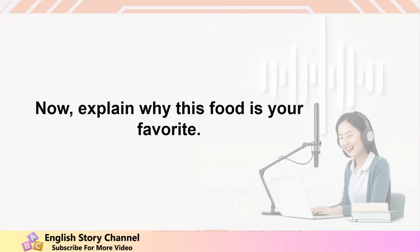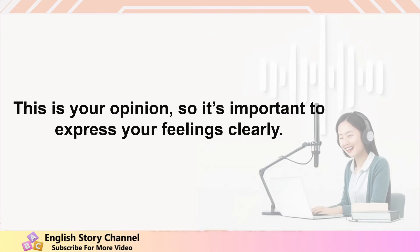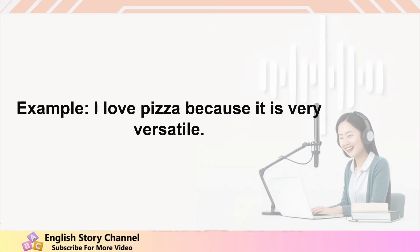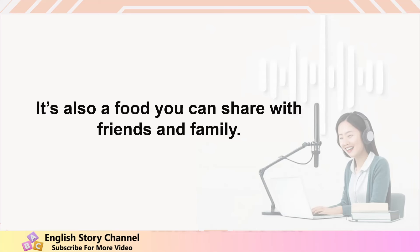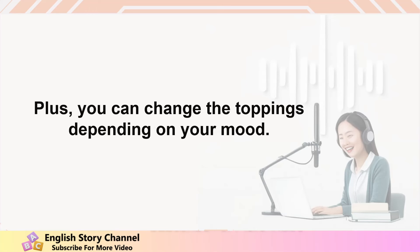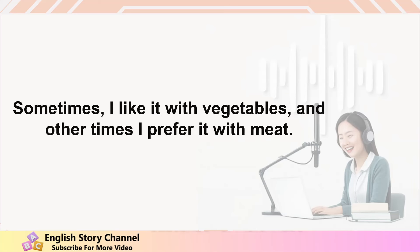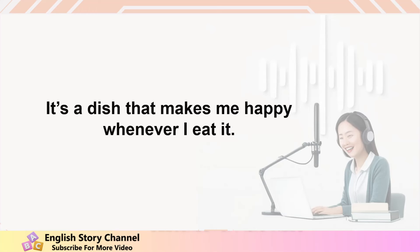Why you like it. Now explain why this food is your favorite. This is your opinion, so it's important to express your feelings clearly. Example: I love pizza because it is very versatile. You can eat it for lunch, dinner, or even as a snack. It's also a food you can share with friends and family. Plus, you can change the toppings depending on your mood. Sometimes I like it with vegetables, and other times I prefer it with meat. It's a dish that makes me happy whenever I eat it.